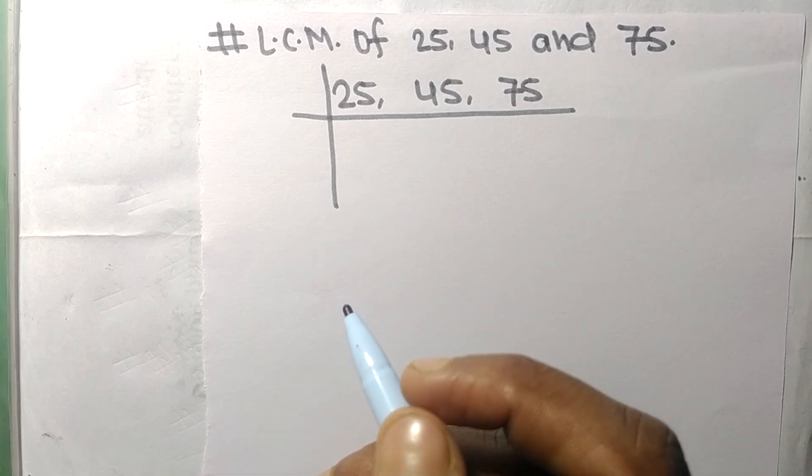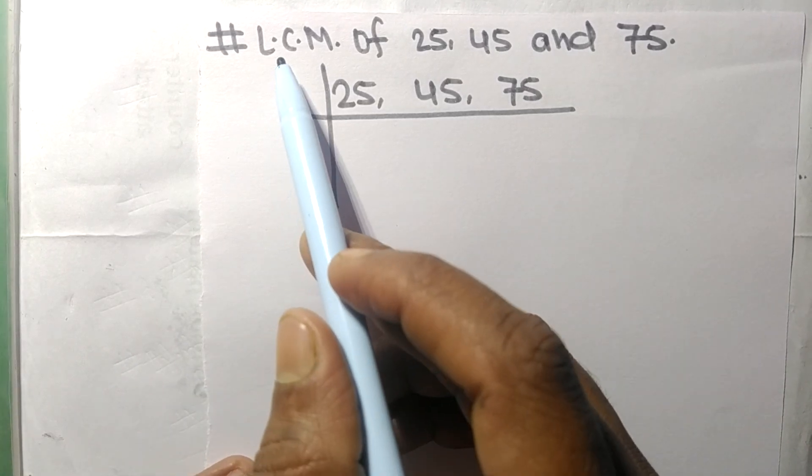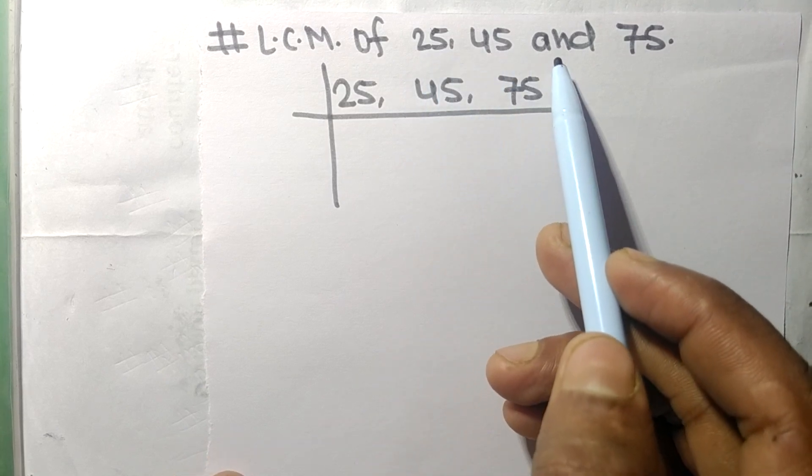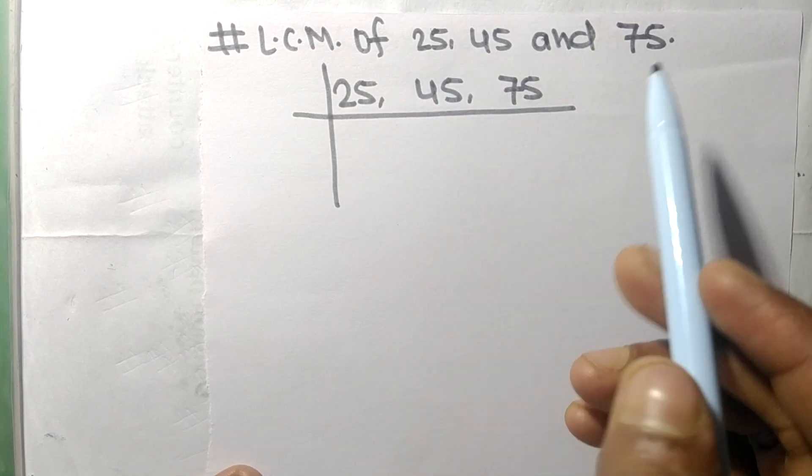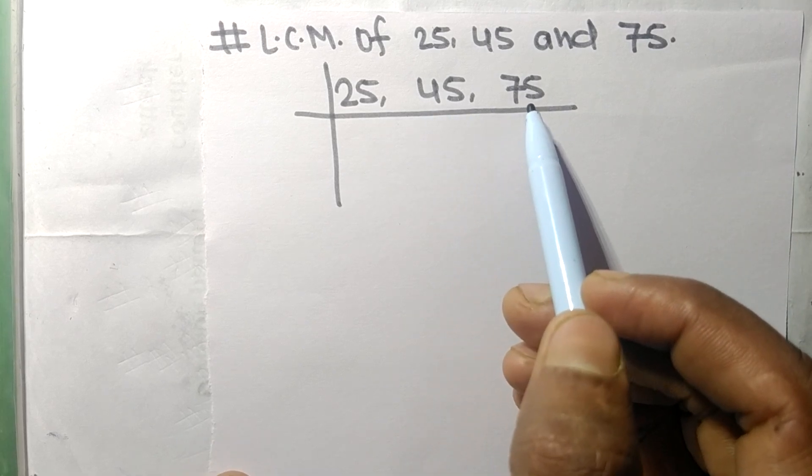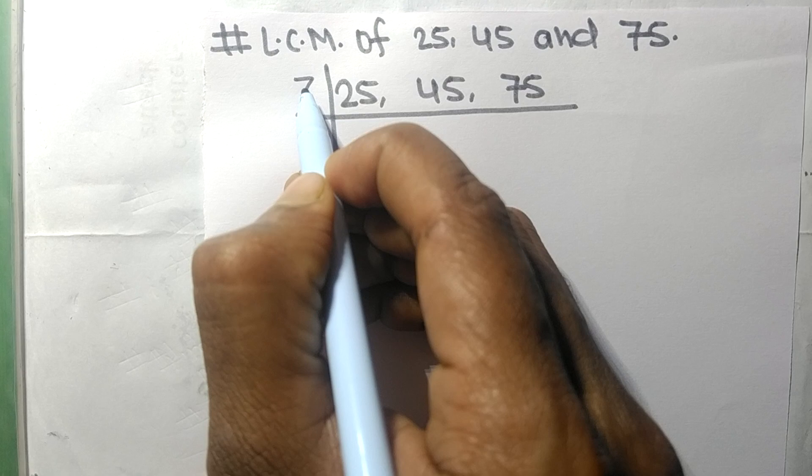Today in this video we shall find the LCM of 25, 45, and 75. Now 45 and 75 are exactly divisible by 3.